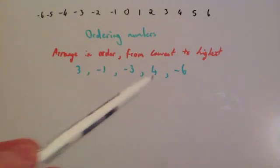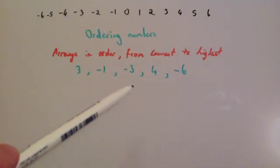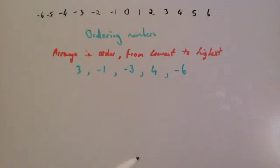So if these were temperatures, the lowest temperature would be minus 6 and then it would be minus 3 and then it would be minus 1 and then it would be 3 and the highest temperature would be 4 degrees Celsius if I was to give it that context.